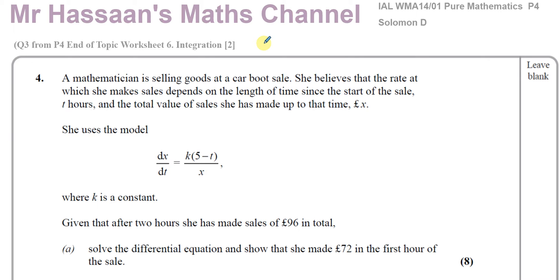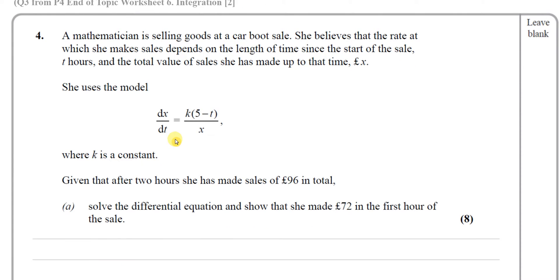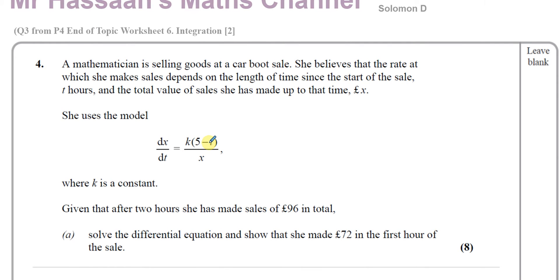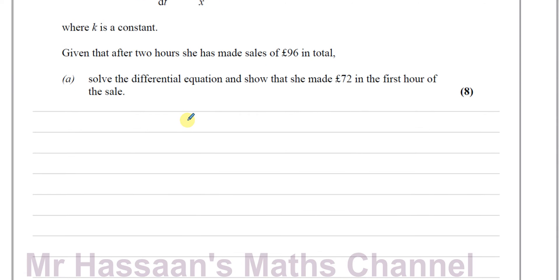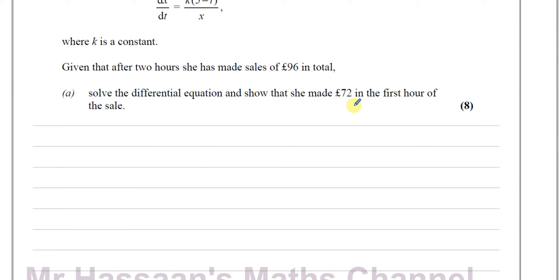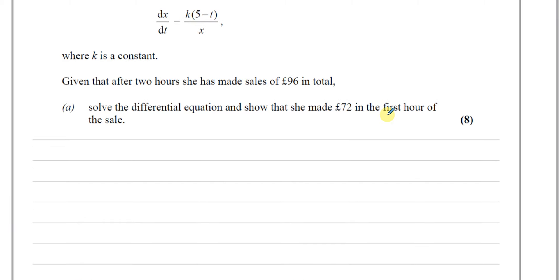This question is about a mathematician who is selling goods at a car boot sale. She believes that the rate at which she makes sales depends on the length of time since the start of the sale, t in hours, and the total value of sales she has made up to that time, x in pounds. She uses the model dx/dt = k(5 − t)/x where k is a constant. Given that after 2 hours she has made sales of 96 pounds in total, solve the differential equation and show that she made 72 pounds in the first hour of the sale.